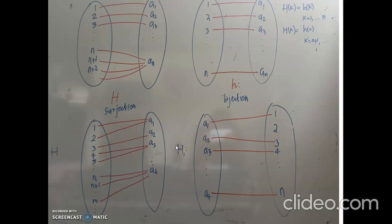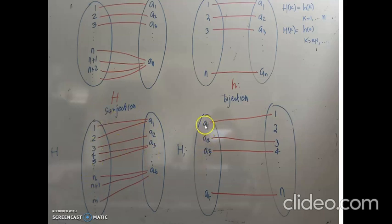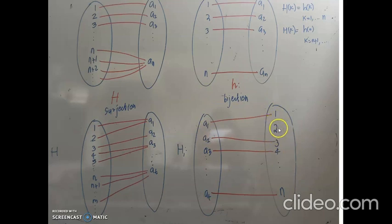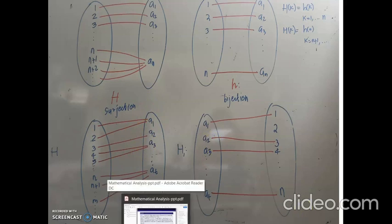By the definition of least element on a set, there exists exactly one least element. So we have defined the image of a_1, a_2, etc., as the least element among their respective preimage sets. Corresponding to every element in S there is exactly one image in N, and that is why this function h_1 is one-to-one. Note that 2 is not an image of any element under h_1 because it is not the least element corresponding to any element in S.